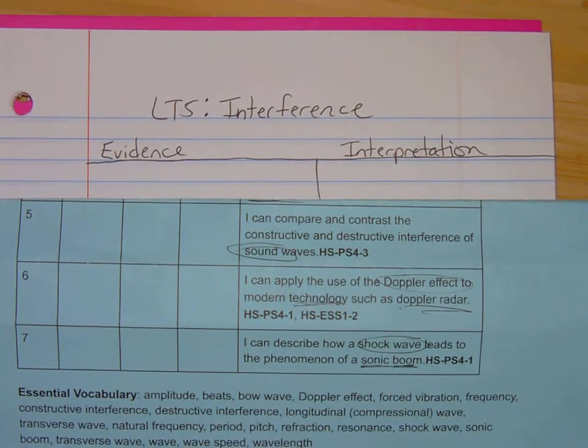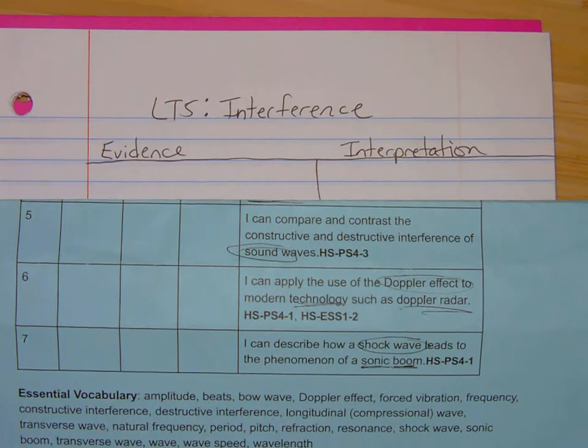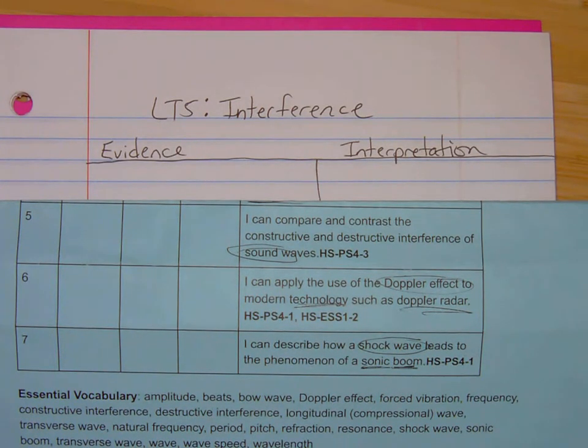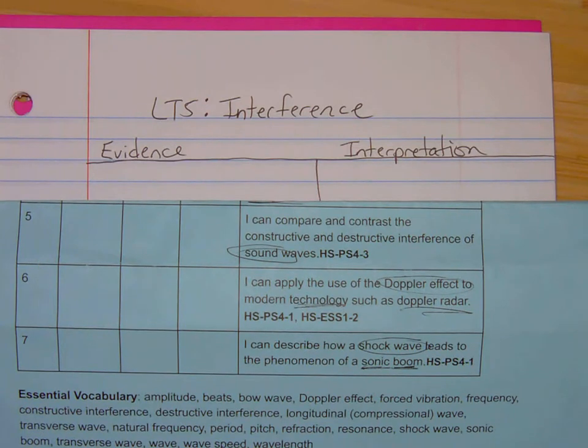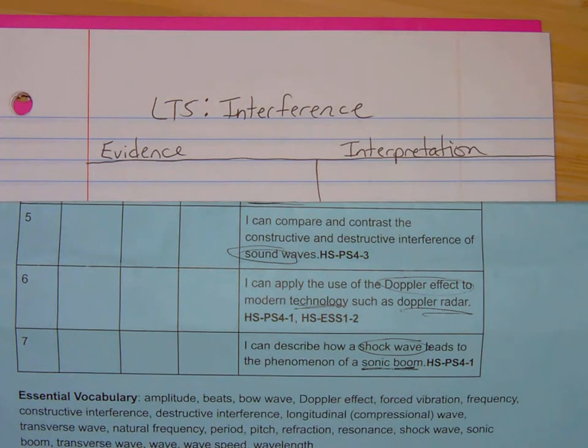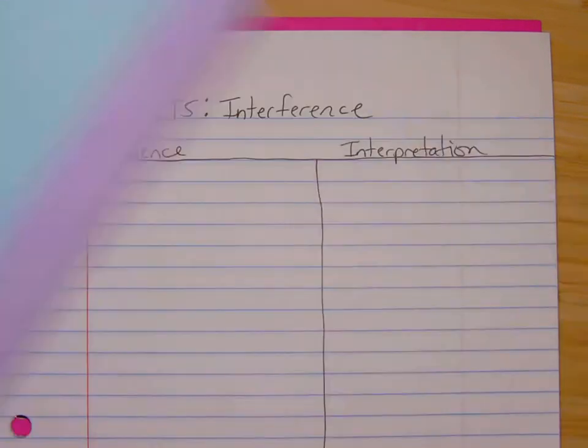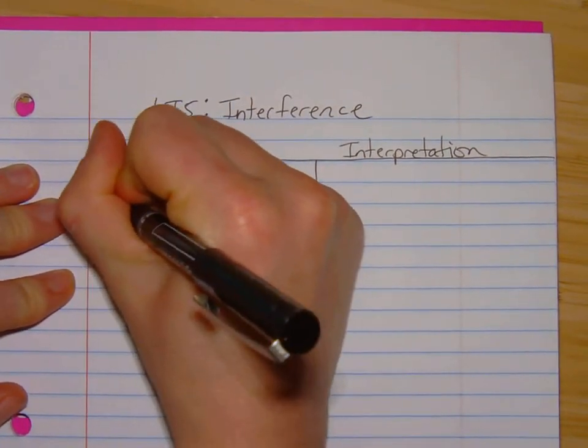These are the notes for LT5 in the sound and wave unit. LT5 says I can compare and contrast the constructive and destructive interference of sound waves. There's some pretty serious uses of this principle, and it's going to be really important that we keep all these concepts separate. When we talk sound reflection and refraction in LT3, when we talk resonance in LT4, constructive and destructive interference are entirely separate from those. So let's just start out with the definition.